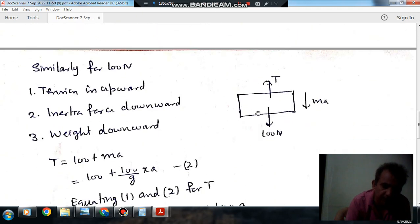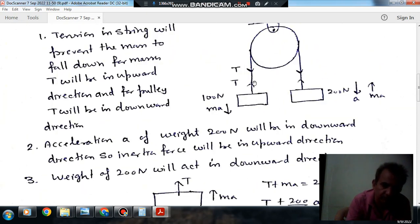This block is in equilibrium under: T upward tension, 100N downward, and MA downward. We have shown two T. This T refers to the pulley and this T refers to the block.